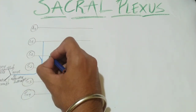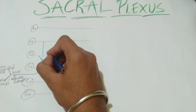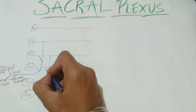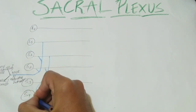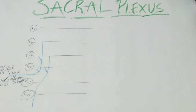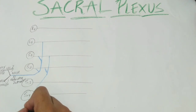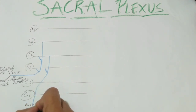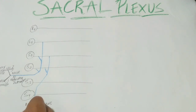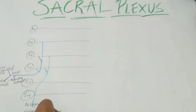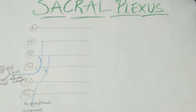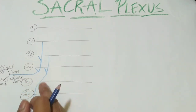The next nerve from the dorsal division arises from S1 and S2 fibers and is called the nerve to piriformis. By the name it is clear — it supplies the piriformis muscle.